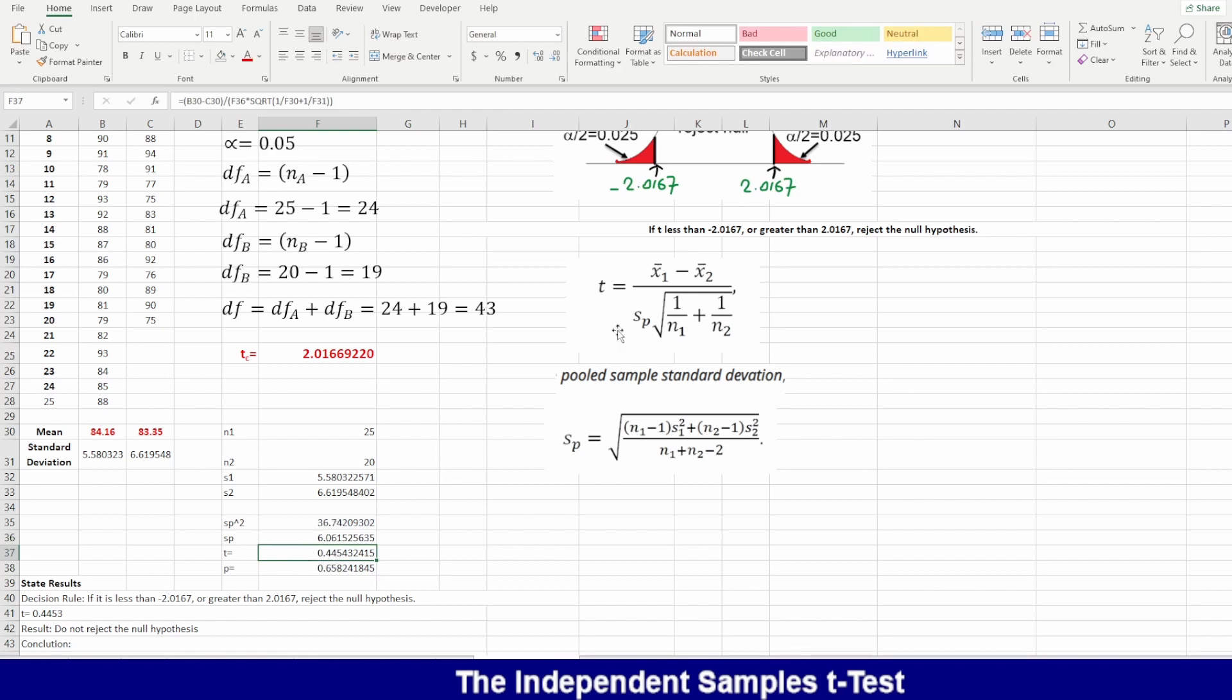To calculate the t-test, we will follow this formula: which is the mean of the first class minus the mean of the second class divided by sp times the square root of 1 over N1 plus 1 over N2. And then after that, I will get 0.44.